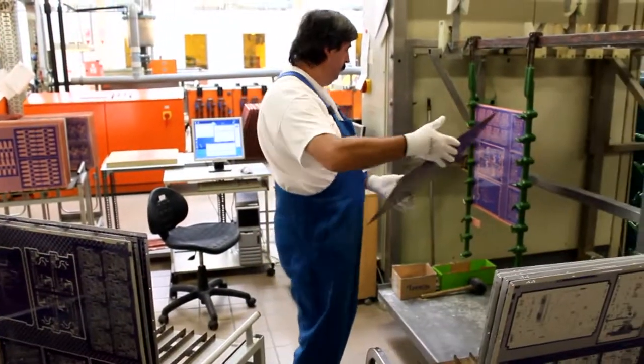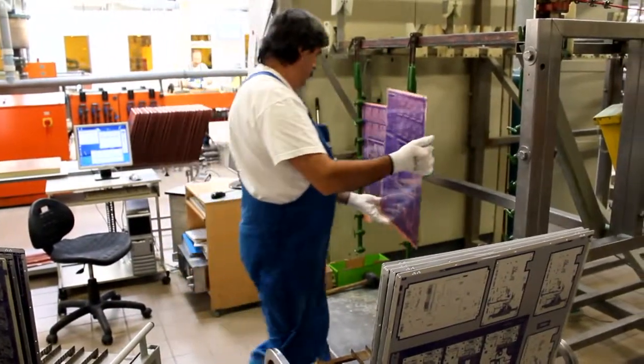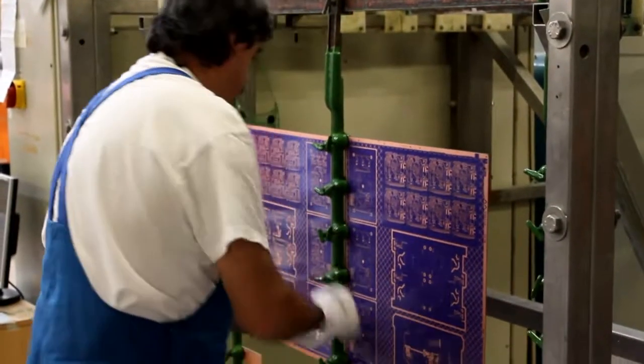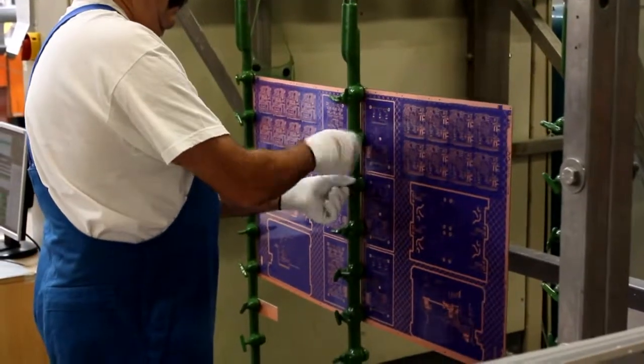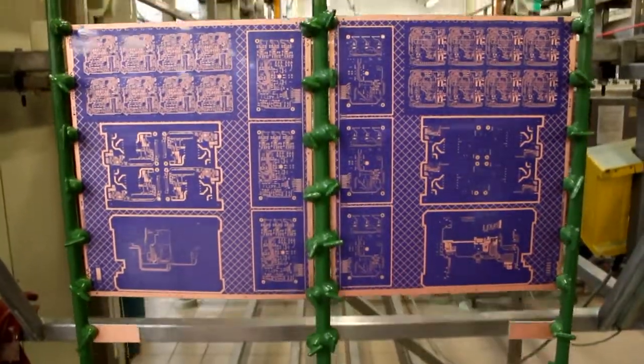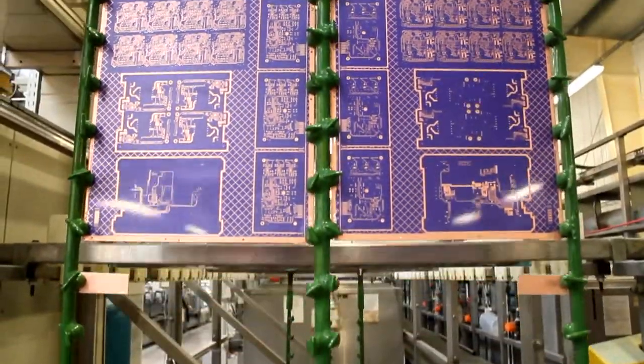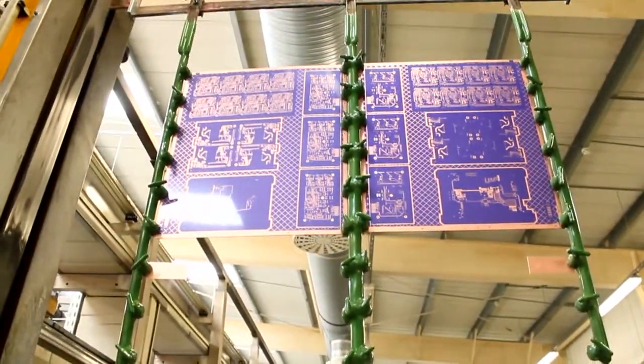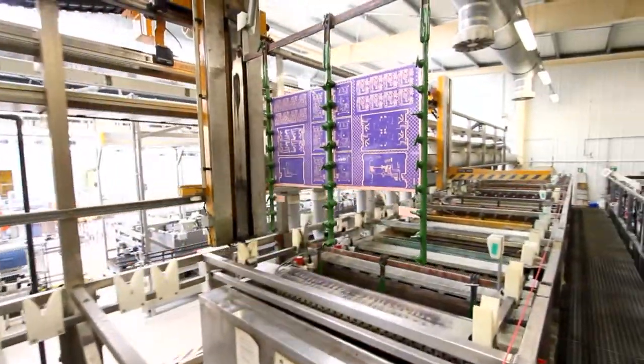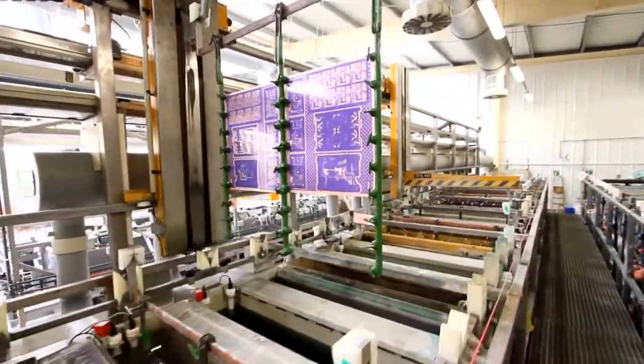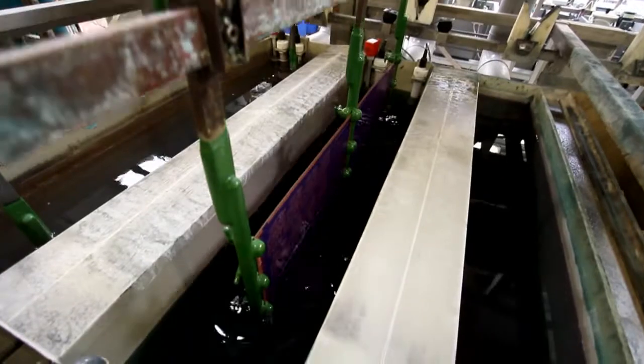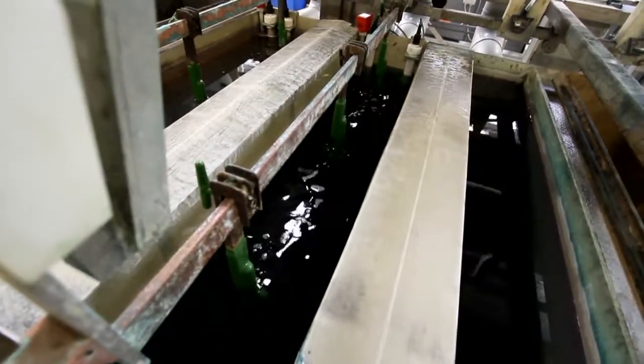Plating. Next, we electroplate the boards with copper. The operator loads the panels onto the flight bars. He checks all the clamps to ensure a good electrical connection. The panels themselves act as cathodes for electroplating and we can plate the hole walls thanks to the conductive carbon layer already deposited there. The operator starts the automated plating line. The copper surface of the panels is cleaned and activated in a number of baths and then electroplated. The whole process is computer controlled to ensure that each set or flight of panels stays in each bath exactly the right amount of time.